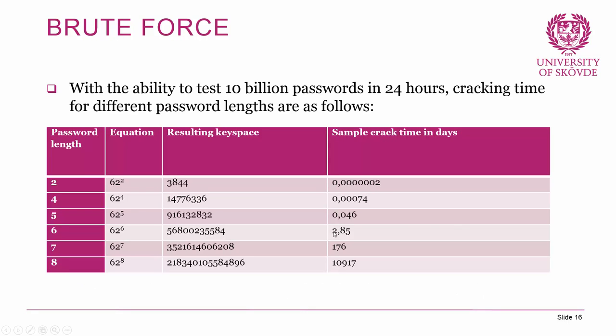For example, with upper and lowercase English letters and numbers — 62 possible characters — and the ability to try 10 billion passwords in 24 hours: passwords of 2, 4, or 5 characters crack extremely fast. Going to 6 characters, the resulting key space gets large and cracking time is roughly three days. A random 7-character password takes about 176 days in this scenario. Going to 8 characters, you'd need to wait almost 11,000 days — definitely a long time.